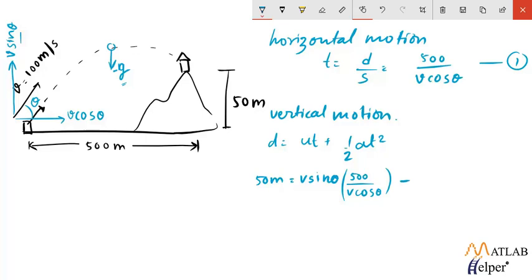So we have a minus sign which is divided by 2. So we will get 4.9 into t squared which is 500 upon v cos theta the entire square. So this will be our displacement equation for the vertical motion.